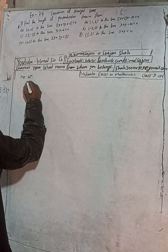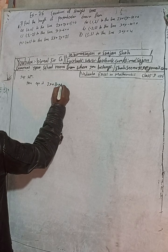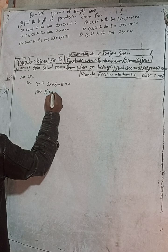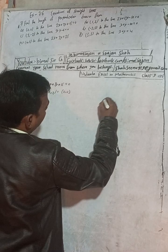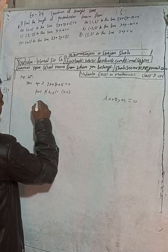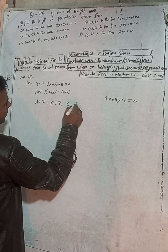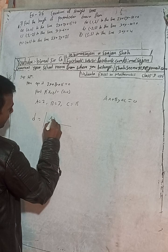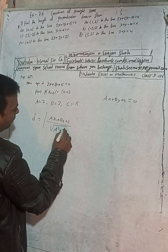Part (a): The equation is 2x + 3y + 15 = 0 and the point P (x1, y1) is the origin (0, 0). Compare this equation with the standard form ax + by + c = 0, so a = 2, b = 3, and c = 15. The length of the perpendicular is given by the formula: d = |ax1 + by1 + c| / √(a² + b²).